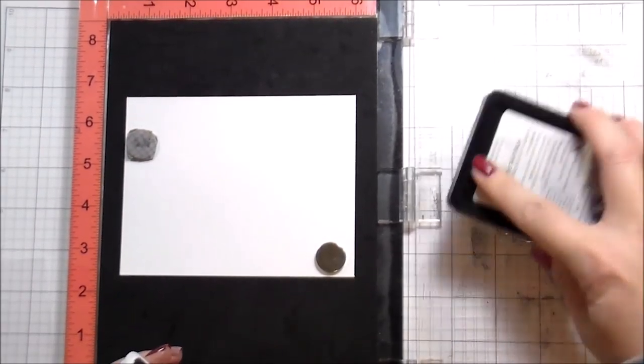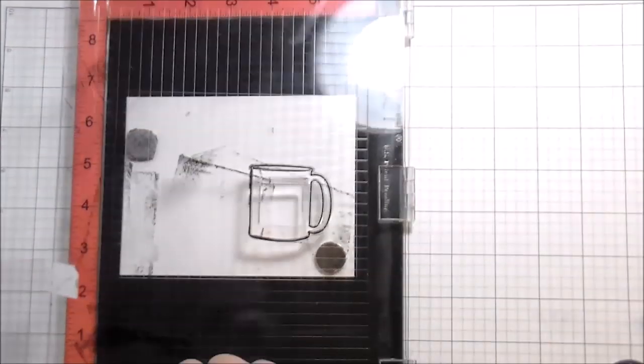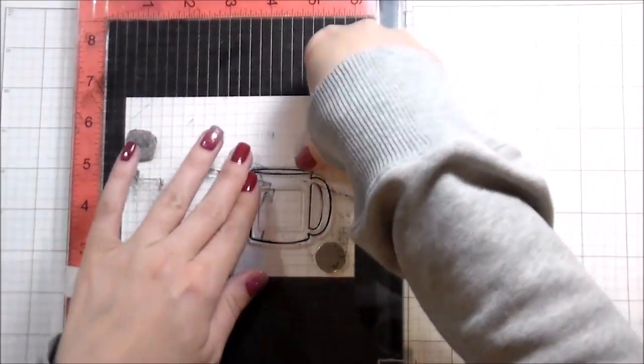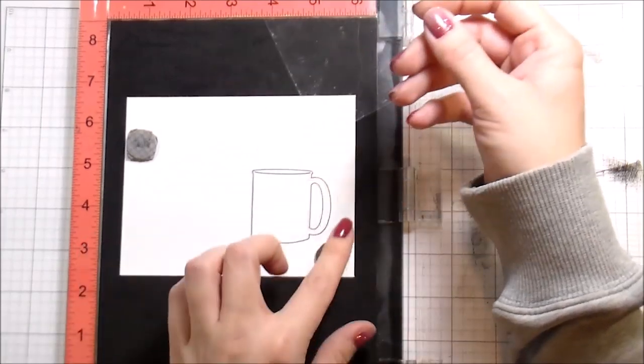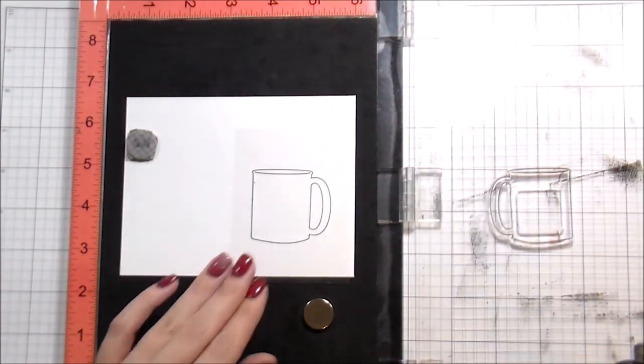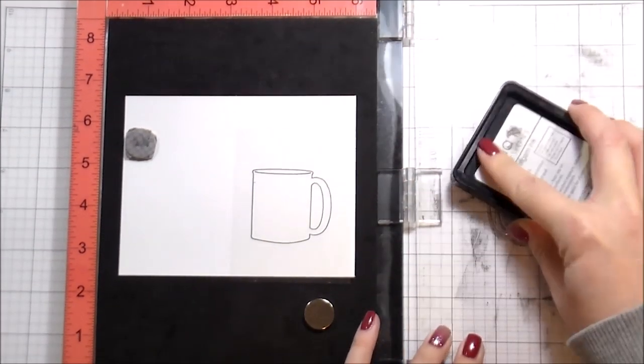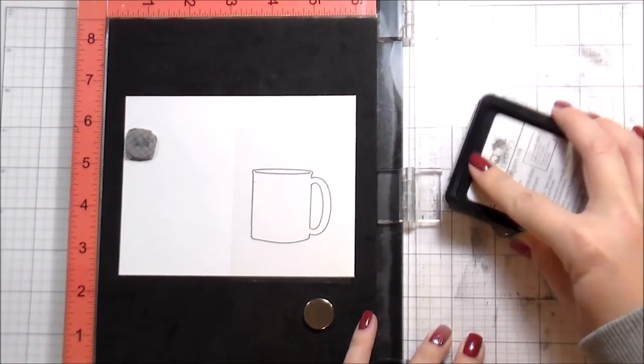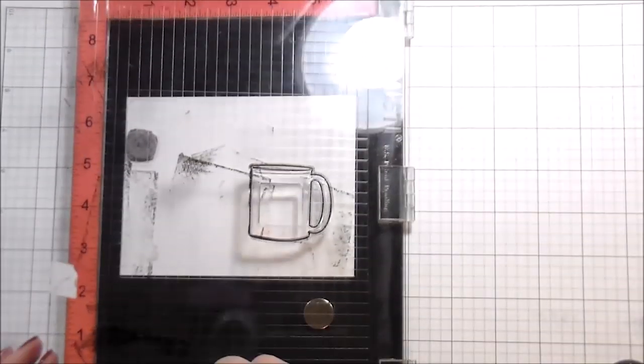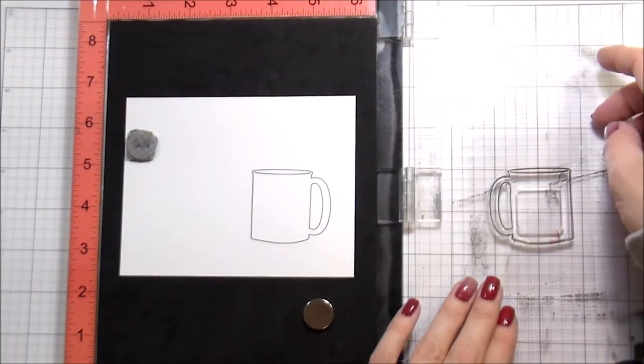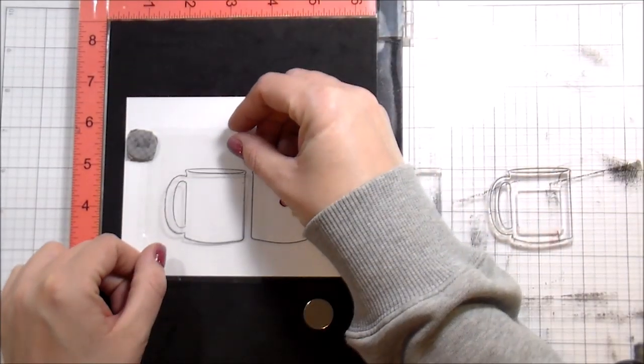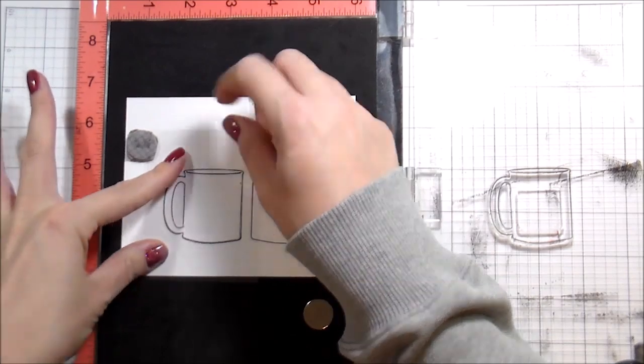It's really just about using your smaller stamps that you have. I'm stamping the mug and then here I have a clear piece of acetate. I'm going to put that back in the same spot in my MISTI and stamp it again on the acetate.